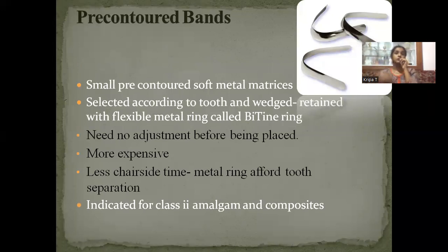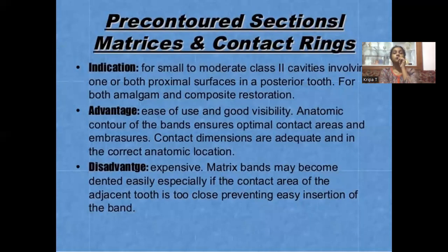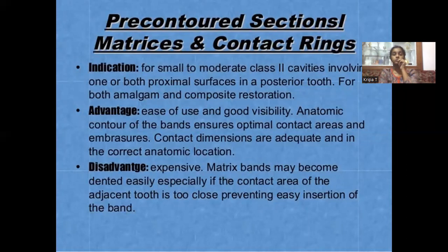Pre-contoured bands are small ones made of soft metal, selected according to tooth and wedged with a flexible metal ring called a Bitine ring. They need no adjustment, but the whole assembly will be expensive. This is for class 2 amalgam. For pre-contoured sectional matrices and rings — for class 2 cavities for both amalgam and composites — the advantage is you get a correct contour and adjustments are not so necessary, but the assembly is expensive and the matrix band may become dented easily, especially if the contact is too close.